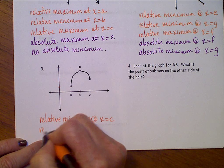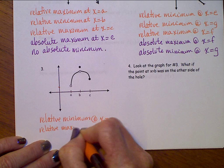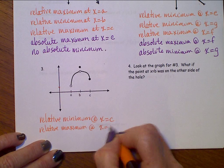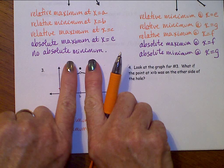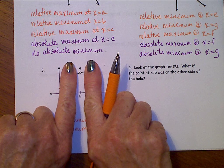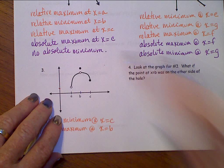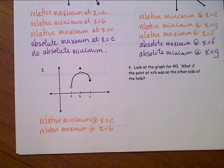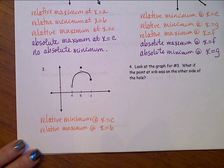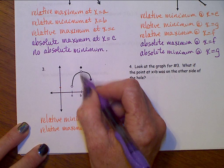There is a relative maximum at x equals b. In the nearby area here, around b, that black dot up there, that is the largest y-value in the nearby area. There is also an absolute maximum at b.